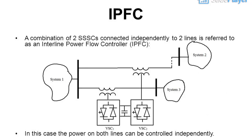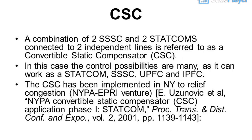IPFC: a combination of two SSSCs connected independently to two lines is referred to as an Interline Power Flow Controller (IPFC). In this case the power on both lines can be controlled independently. CSC: a combination of two SSSCs and two STATCOMs connected to two independent lines is referred to as a Convertible Static Compensator (CSC). In this case the control possibilities are many, as it can work as a STATCOM, SSSC, UPFC, and IPFC.